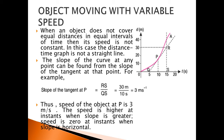Object moving with variable speed. When an object does not cover equal distance in equal intervals of time, its speed is not constant. In this case, the distance-time graph is not a straight line. In this graph you can see a pink line which represents the variable speed of the moving object. The slope of the curve at any point can be found from the slope of the tangent at that point, so we draw a tangent on the curve.